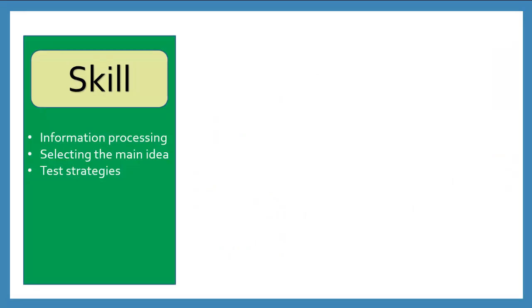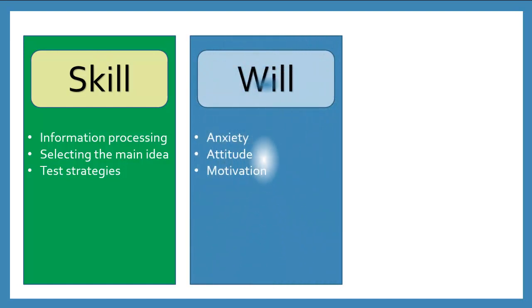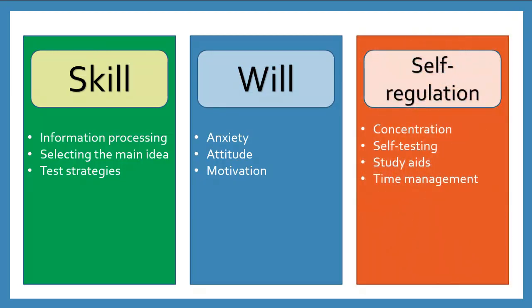The skill measurement is broken into three sections: Information Processing, Selecting the Main Ideas, and Test Strategies. The will measurement is broken down into three sections: Anxiety, Attitude, and Motivation. The self-regulation assessment is divided into four categories: Concentration, Self-Testing, Study Aids, and Time Management.